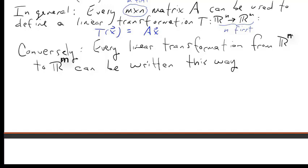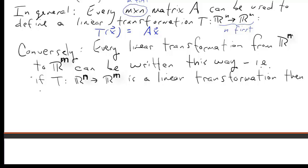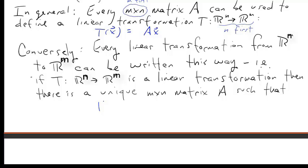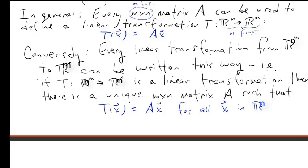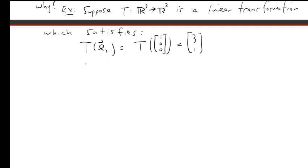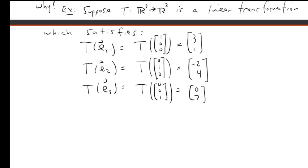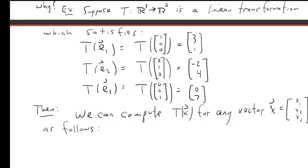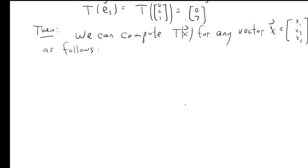Conversely, every linear transformation from Rn into Rm can be written this way. If T is any linear transformation from Rn into Rm, there is always a unique m by n matrix A such that T of x equals A times x for all x in Rn. Suppose T from R3 into R2 is a linear transformation satisfying: T of E1 equals (3, 1), T of E2 equals (-2, 4), and T of E3 equals (0, 7). We can compute T of x for any vector (x1, x2, x3) in R3.